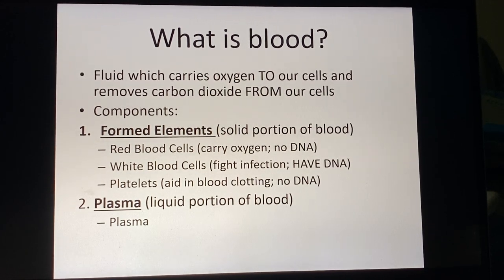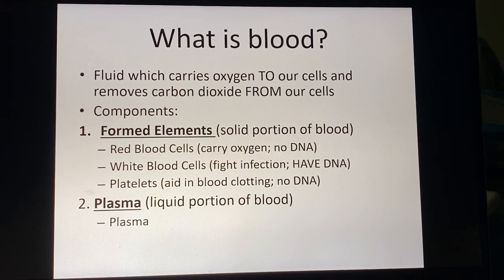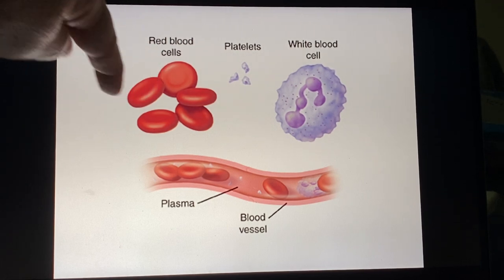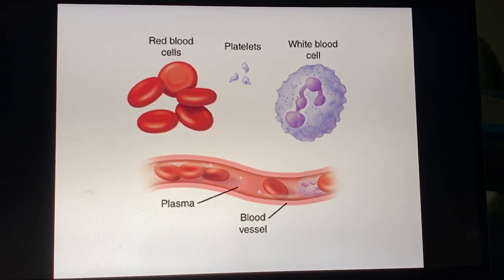Everything else falls into the liquid portion of blood, which is called plasma. Some of you may be plasma donors — you help a lot of people while doing that. Red blood cells have this characteristic disc shape so they can efficiently pick up oxygen and exchange it for carbon dioxide, but there's no DNA in there.